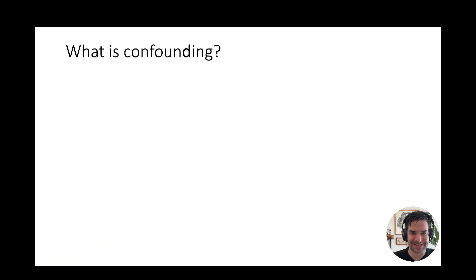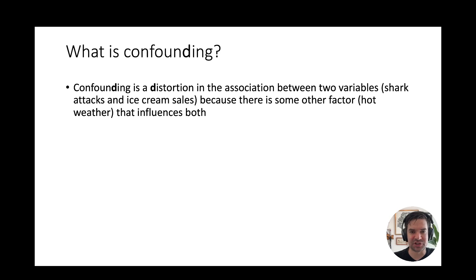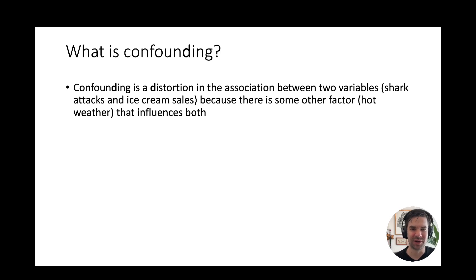So what is confounding? Confounding is a distortion in the association between two variables — say shark attacks and ice cream sales — because there's some other factor that influences both. If every summer there are more ice cream sales and more shark attacks, did one cause the other? No, there's a distortion. The 'D' is bolded to remember that confounding is a distortion between two variables because of some other factor that influences both.